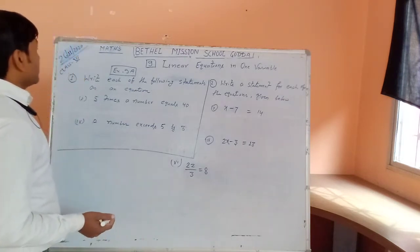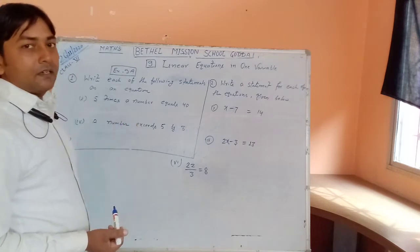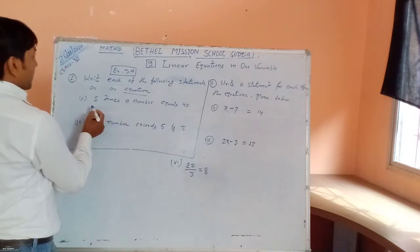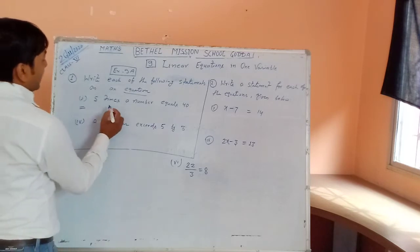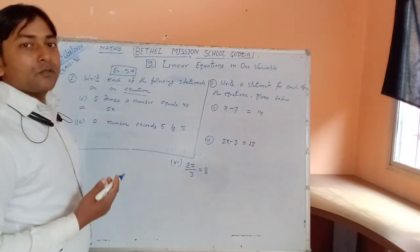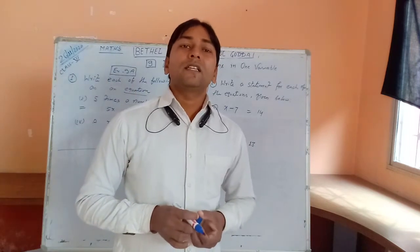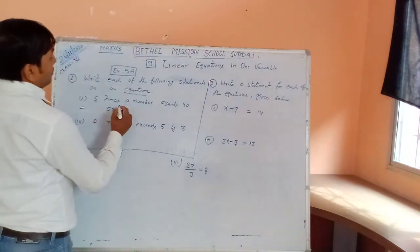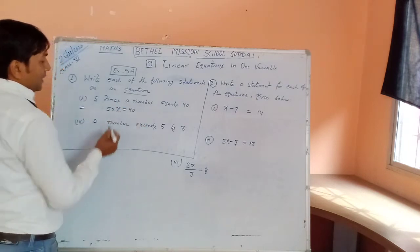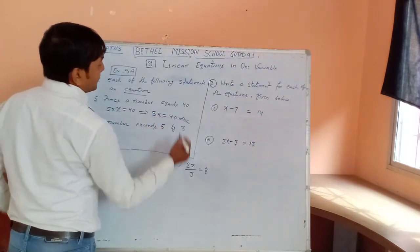The question says: write each of the following statements as an equation. The first statement is '5 times a number equals 40.' Here, 'times' means multiplication, and the unknown number is a variable — it can be x, y, z, a, b, or c. I am going to take x. So 5 times x equals 40, that is 5x = 40. That is the answer.